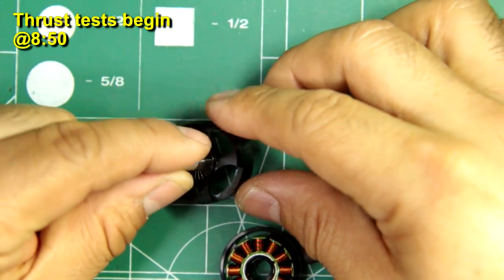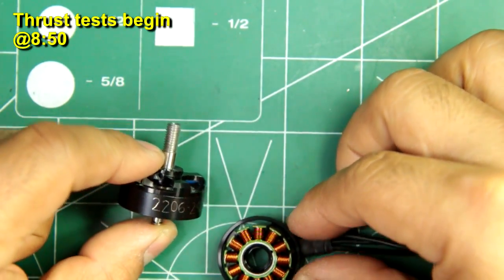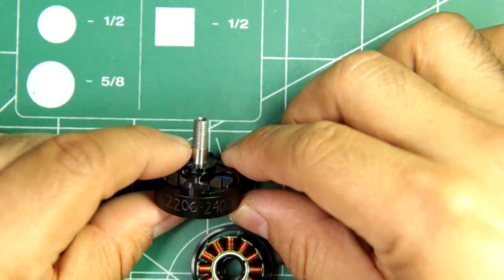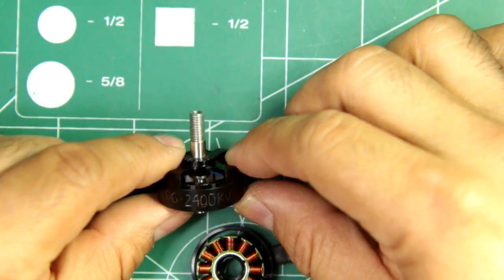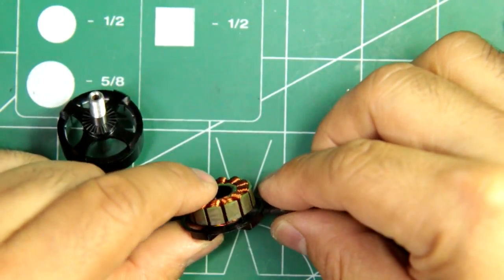Alright, so here we have a prototype motor sent in by my RC Mart. It's the RCX RS2206-2400 KV motor and again this is a prototype that my RC Mart sent in.